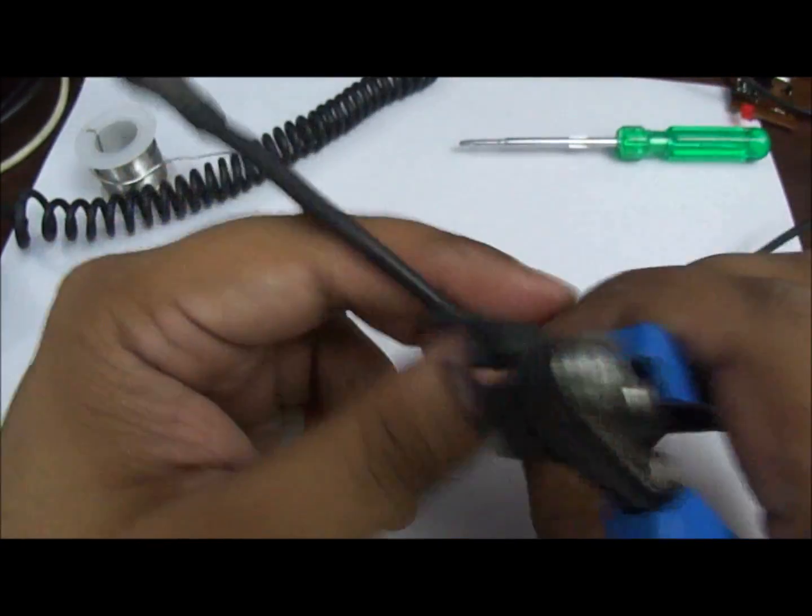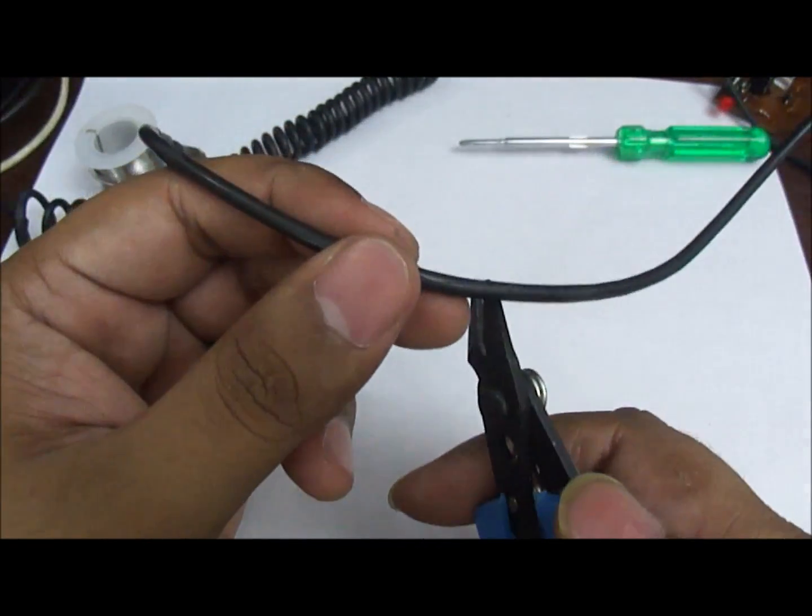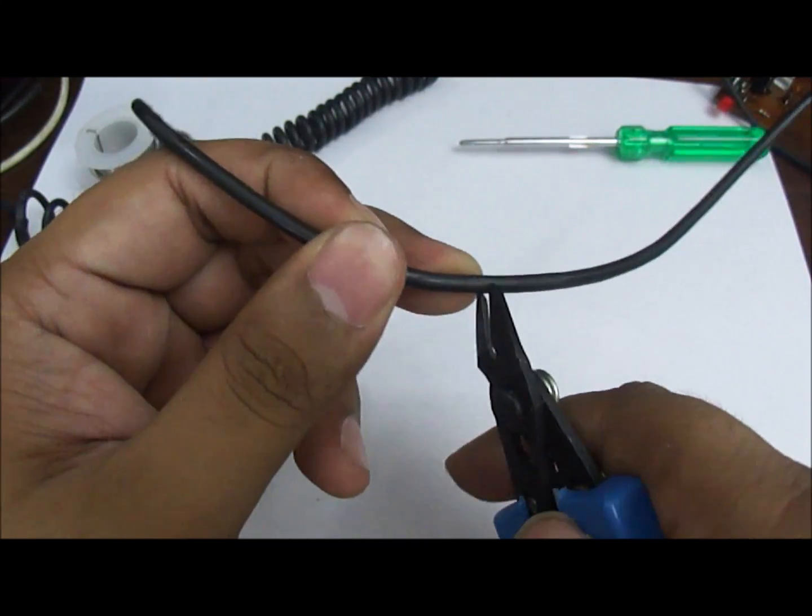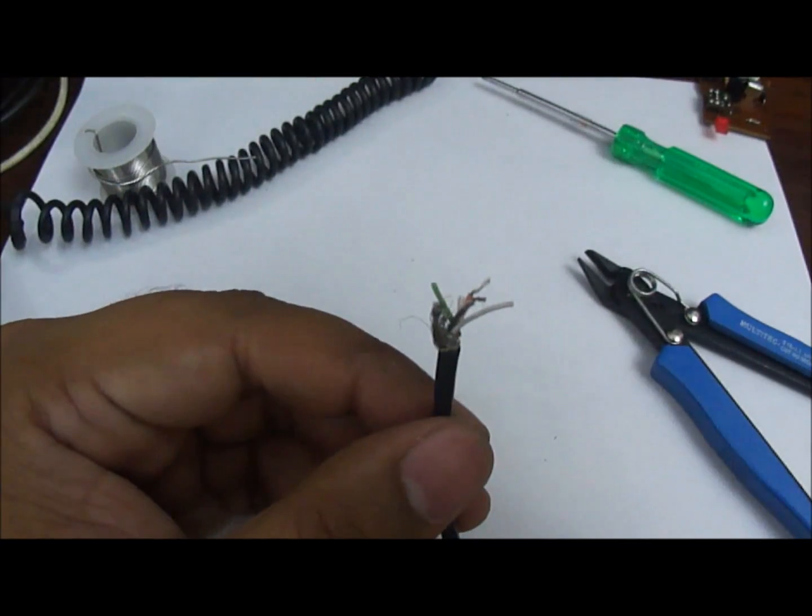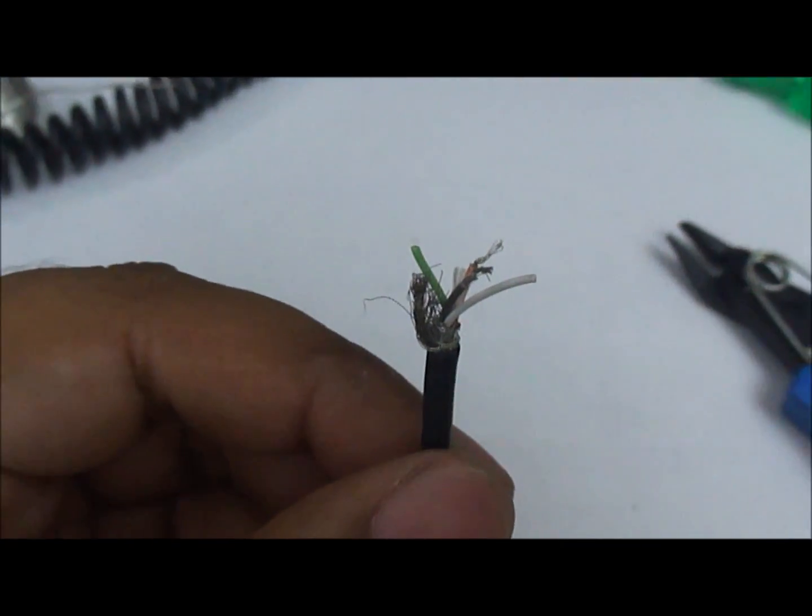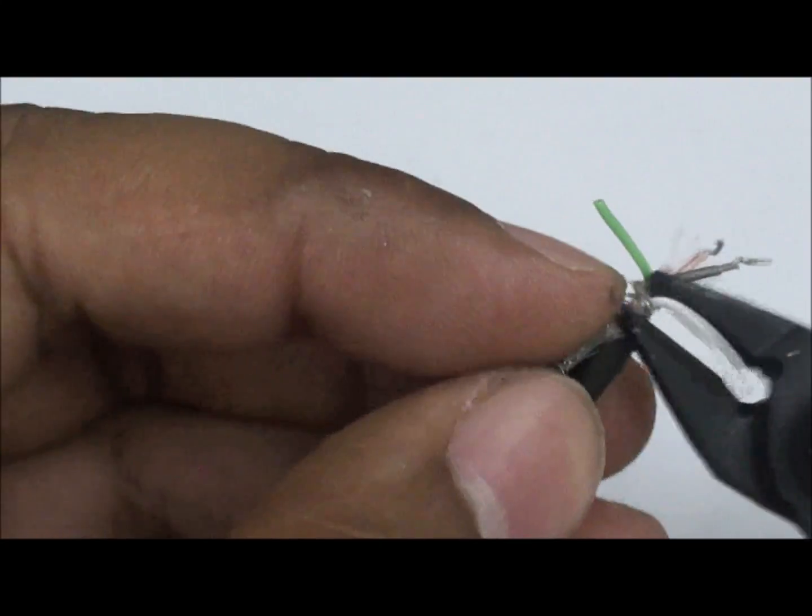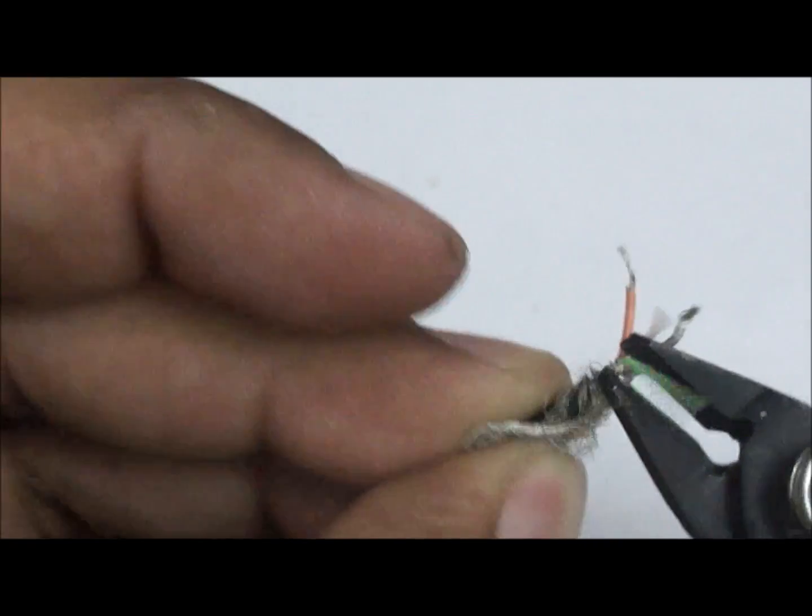Next we take a micro USB cable and cut it from the center. We strip the cable to expose the inner wires. We trim everything but the red and black wires.